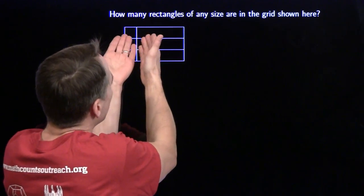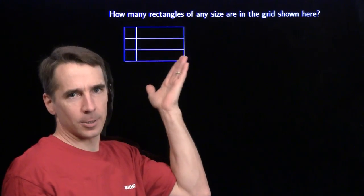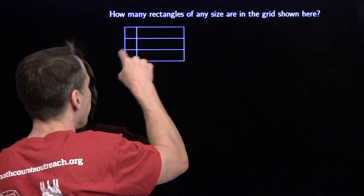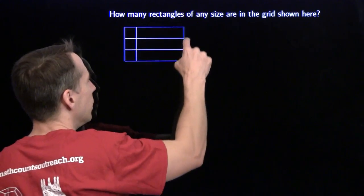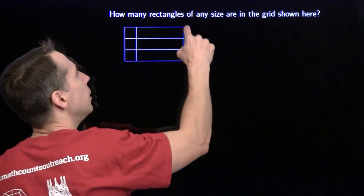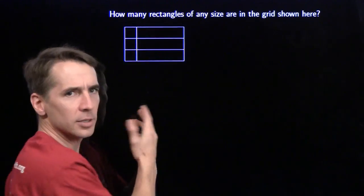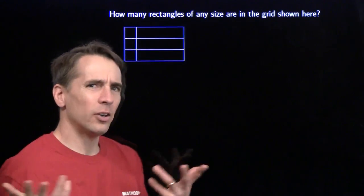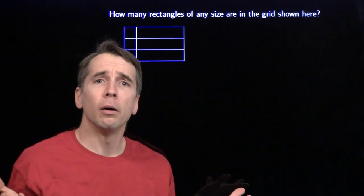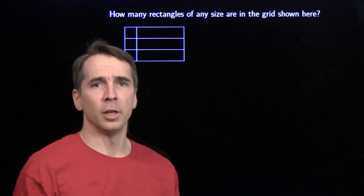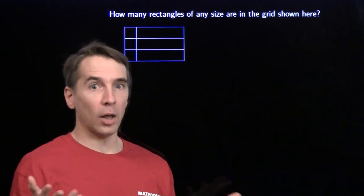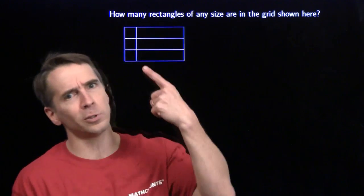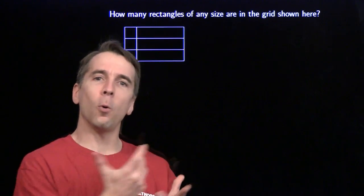We have to count the number of rectangles of any size in this grid. Now we could just start off by going: okay, there's one, two, three, four, five, six — I got this one here, seven. And there's this one here, eight. And you can see the problem already — nine — how do we know we've gotten them all? How do we know we've counted everything once? If we keep going, after a while we might start repeating ourselves. How do we know we've counted everything only once?